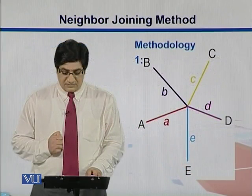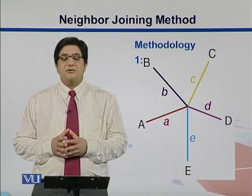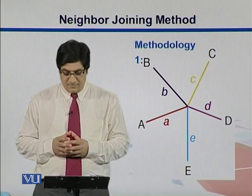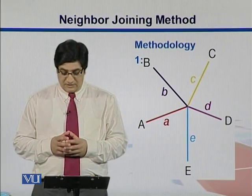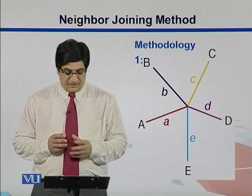In the methodology, we take those sequences and first make an unrooted tree, a star-like tree from them. We put A, B, C, D, and E, and the branch lengths are represented by their respective small letters.